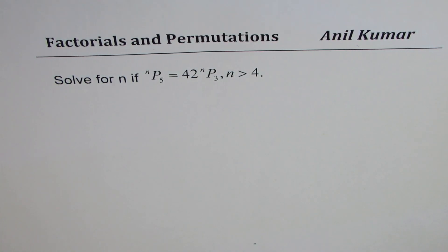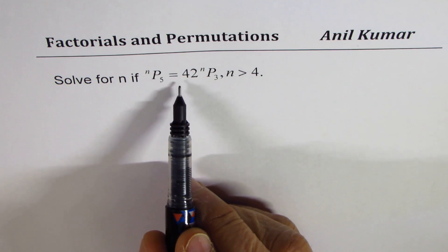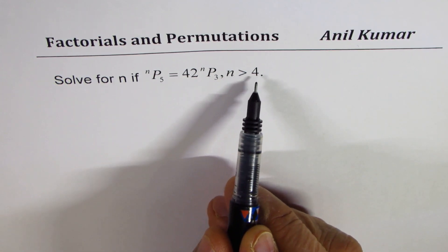Factorials and permutations. Here's another question on this topic. Solve for n if nP5 equals 42·nP3, where n is greater than 4.